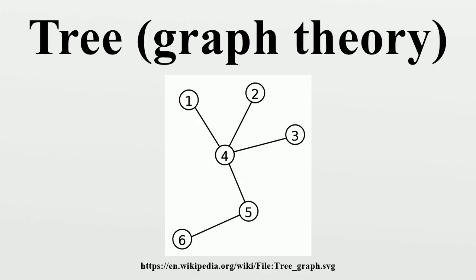A labeled tree is a tree in which each vertex is given a unique label. The vertices of a labeled tree on n vertices are typically given the labels 1, 2, and so on. A recursive tree is a labeled rooted tree where the vertex labels respect the tree order. A K-ary tree is a rooted tree for which each vertex has at most K children. Two-ary trees are sometimes called binary trees, while three-ary trees are sometimes called ternary trees.